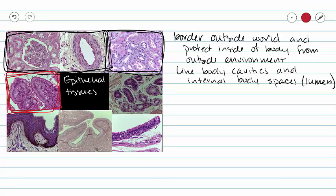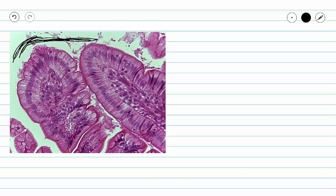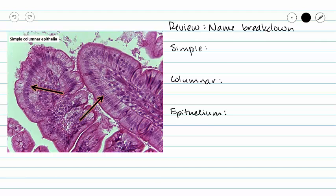Let's take a closer look. Our lumen — all of the white space — is going to be the inside of our digestive tract. This slide is from inside mammal intestines, usually small intestines. We don't see a huge variety of cells; primarily everything you're looking at is simple columnar epithelium. The arrows are pointing to the nuclei of simple columnar epithelium.